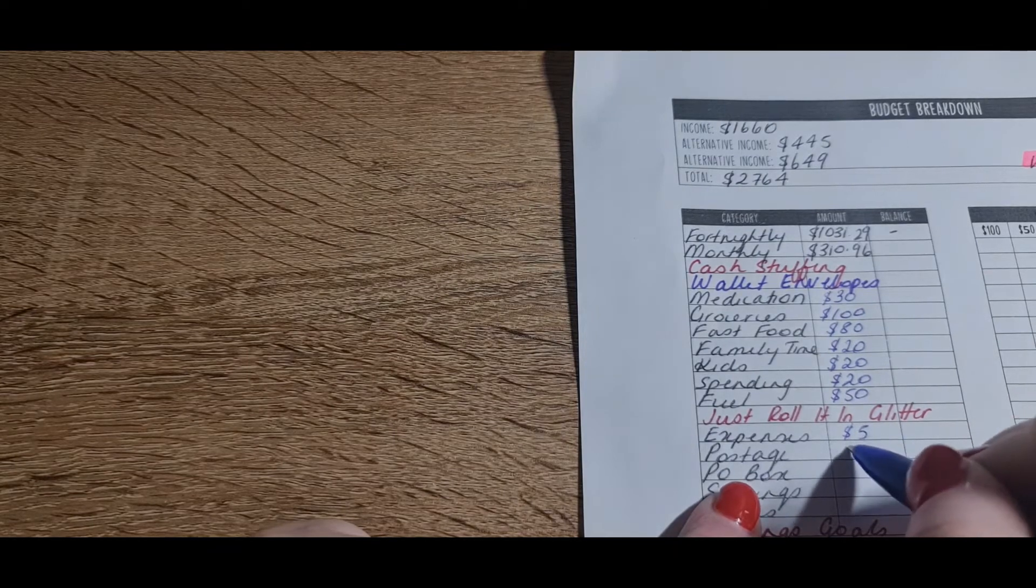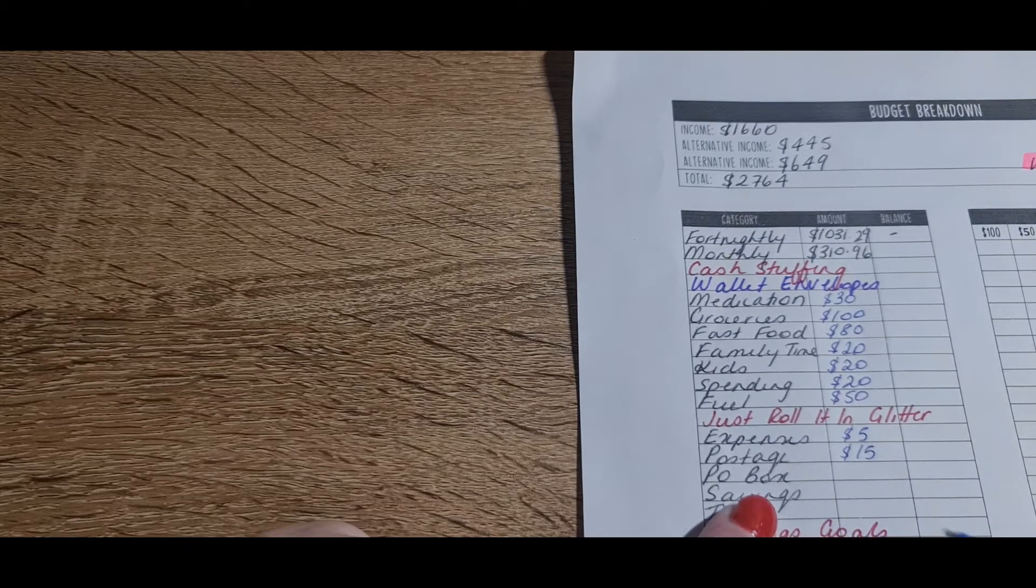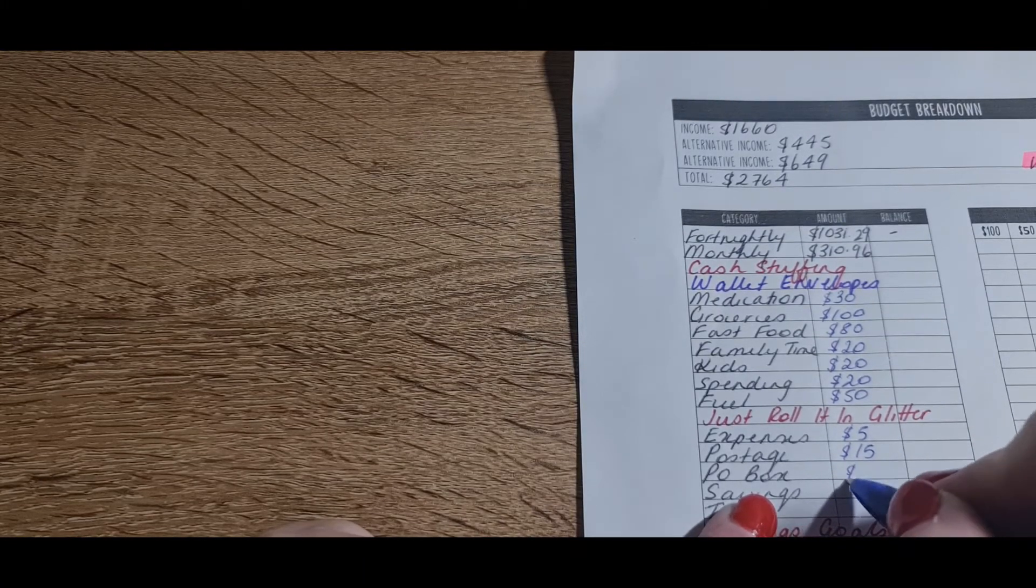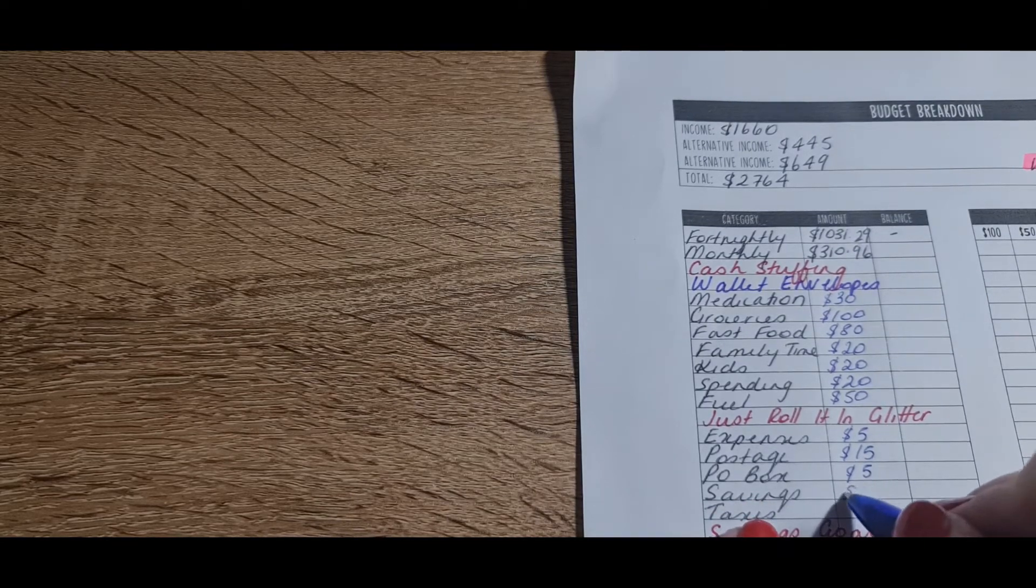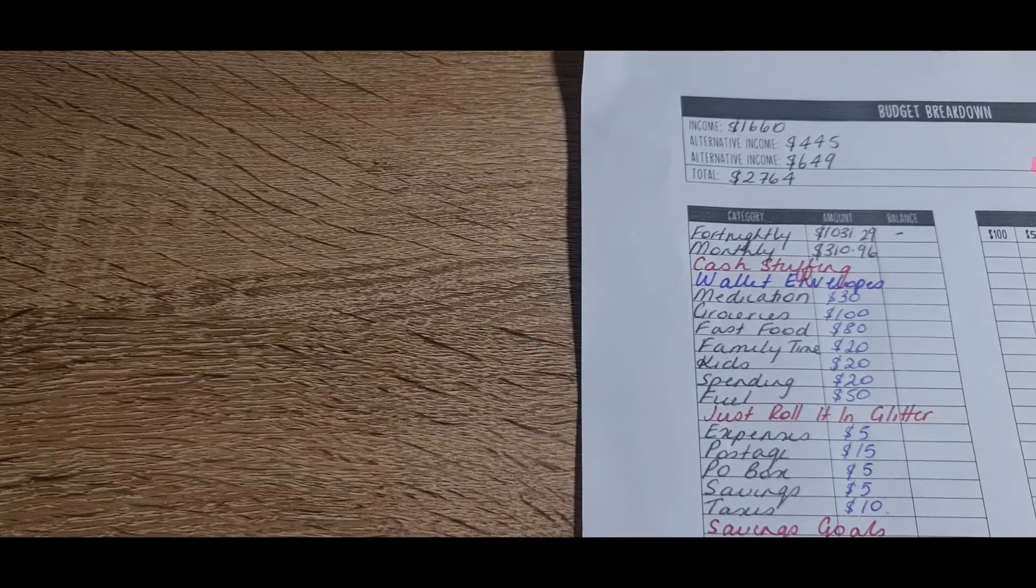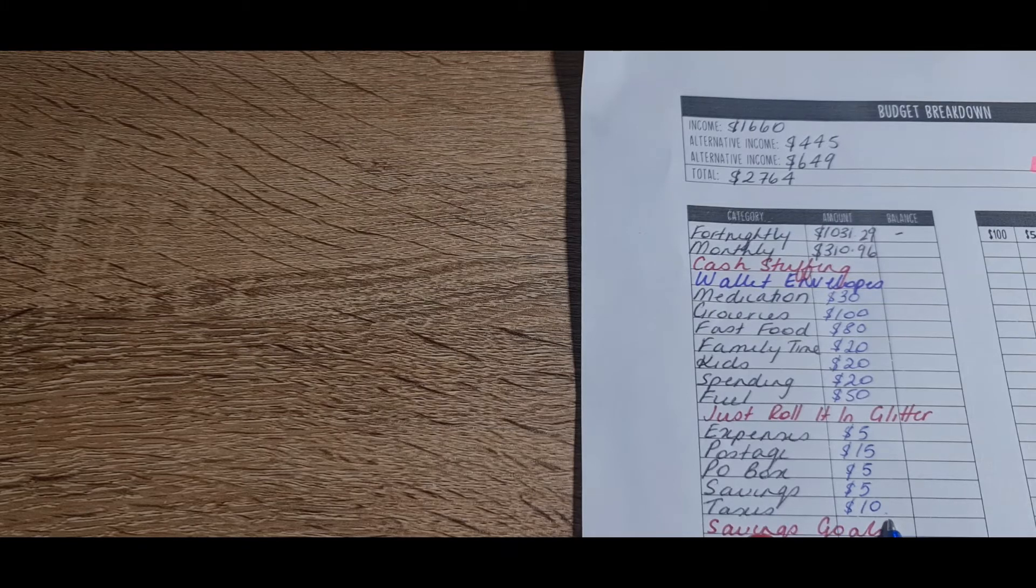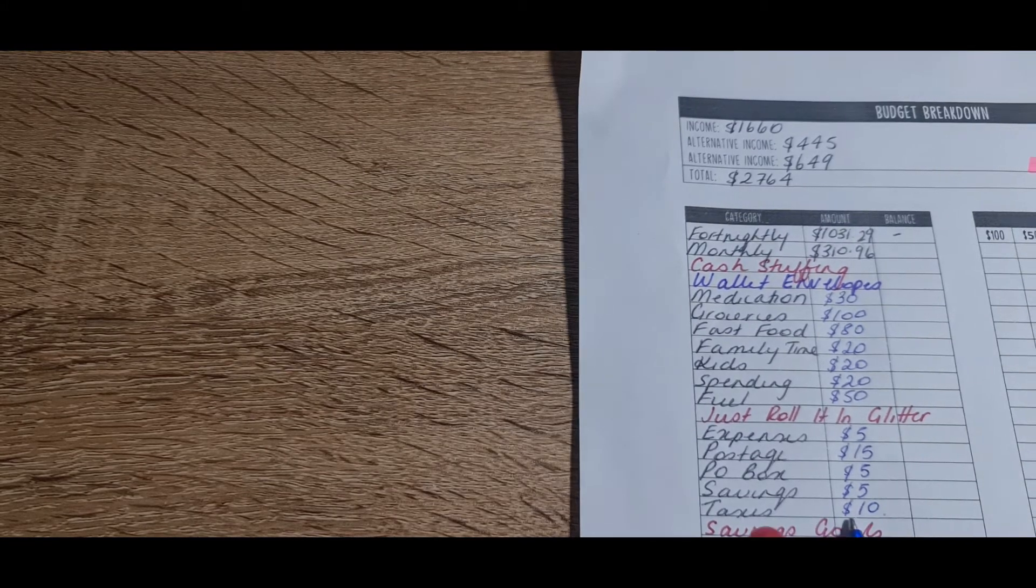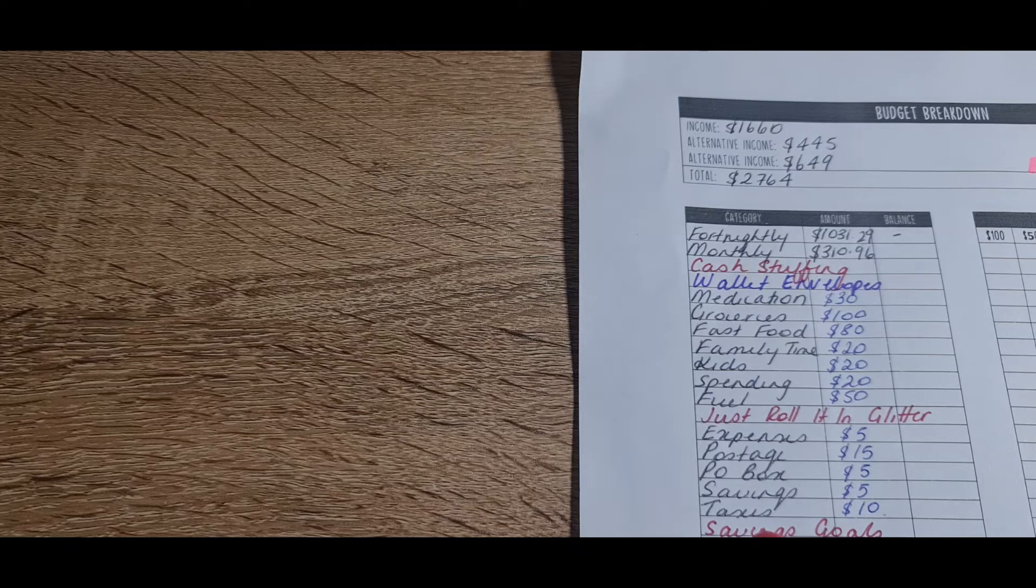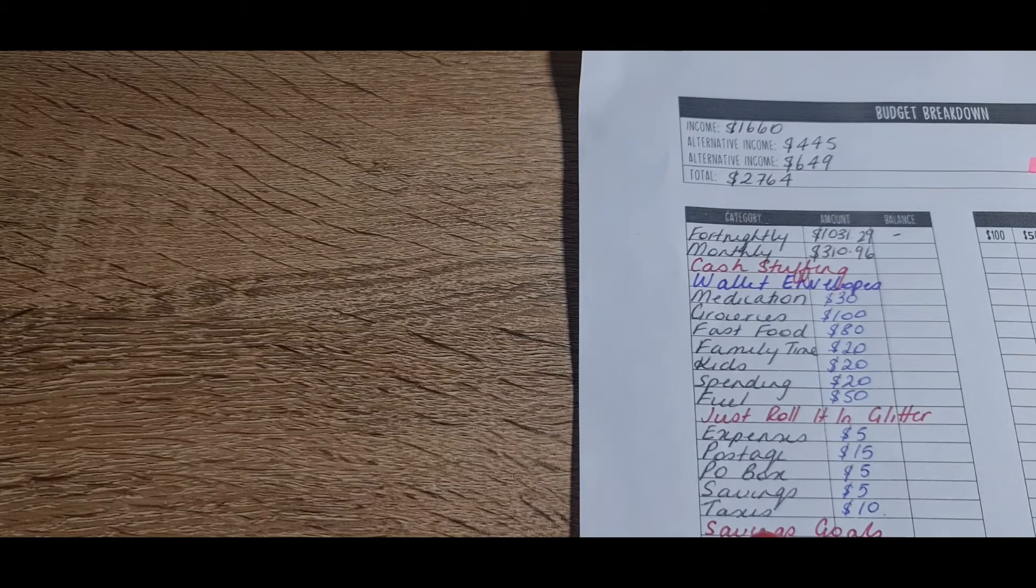Okay, on to the next one. Rolling Glitter is my small business slash side hustle expenses. That's getting $5. Postage is getting $15 because it's quite expensive, and I need to make sure that I have enough for the whole month. PO box I am saving up to get a PO box. Savings is $5, and taxes is $10. Postage is a $10 and a $5. PO box is $5, savings is $5, and taxes would be a $10.